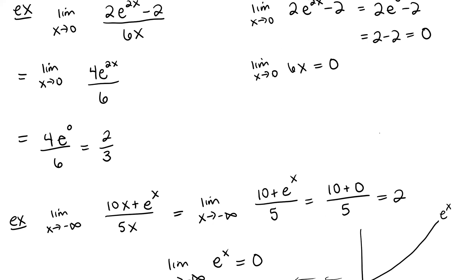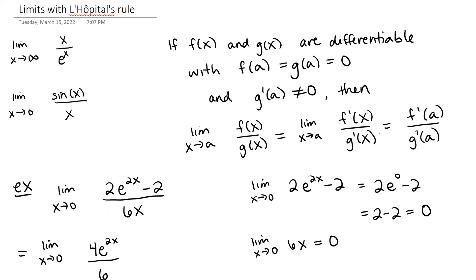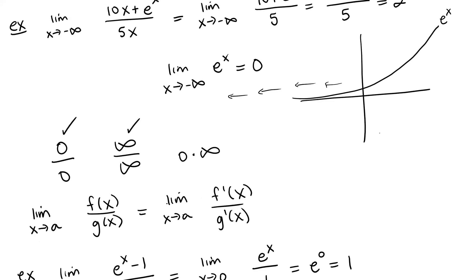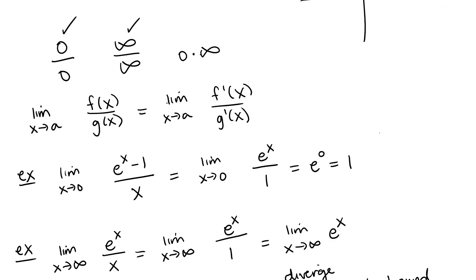Remember, we can apply L'Hôpital's Rule when we have a form 0 over 0 or infinity over infinity. If we have the form 0 times infinity, what we need to do is rewrite it so that it either looks like infinity over infinity or it looks like 0 over 0.